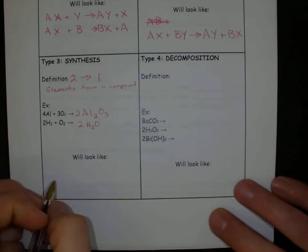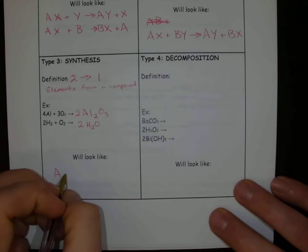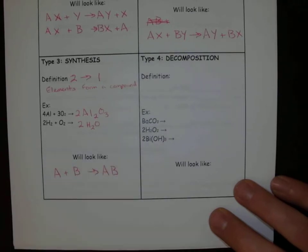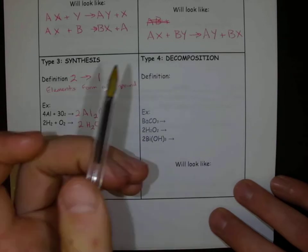So our reaction is going to be basically A plus B goes to AB. That's not too complicated.